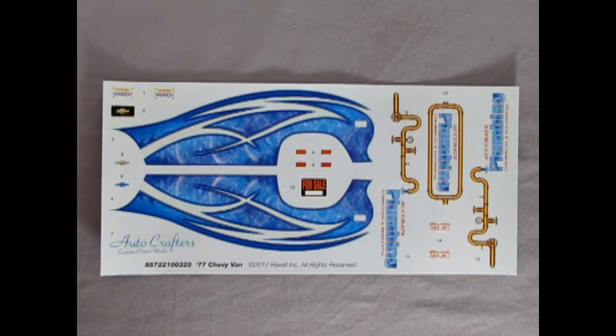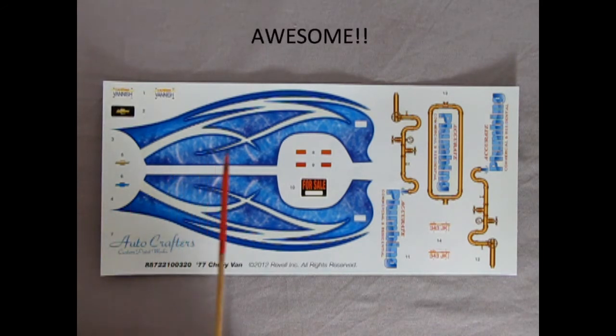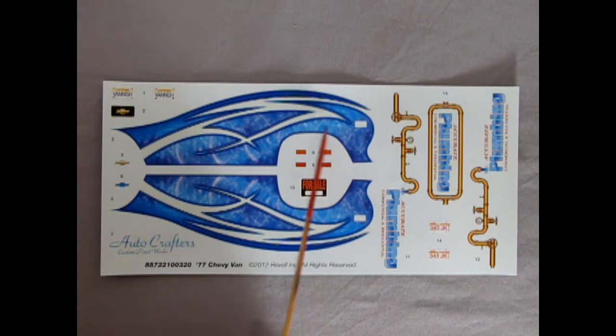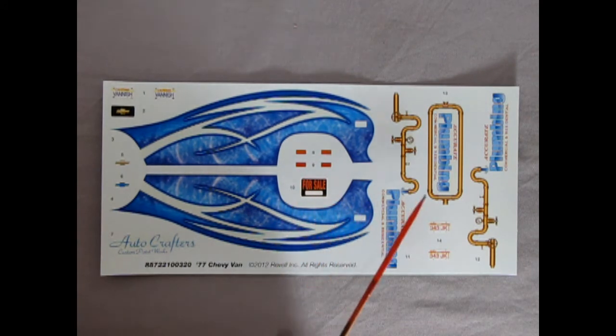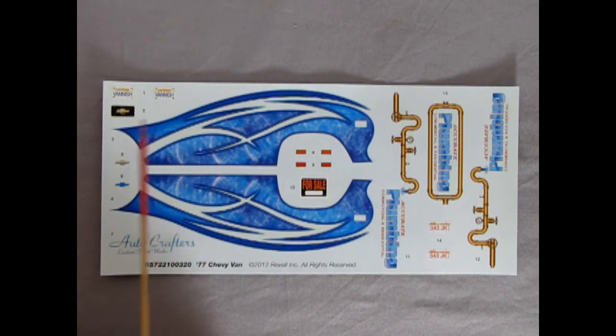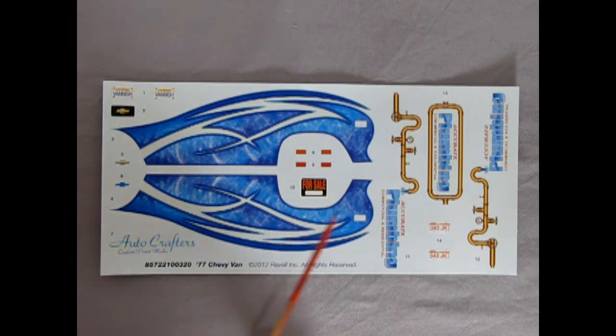Here we have our decal sheet which I will give five gold stars on. Because this thing is really psychedelic. And as you can see here you got this nice blue pattern on. You got a for sale sign. Here's our side marker lamps as decals. And then you've got this nice stuff from Accurate Plumbing on here. Illinois again 343 JK. And up here California Vanish. You also get a black Chevy license plate. And then you've got your choice here for the grill. And then here's your Auto Crafters custom paint works. So again very very groovy.